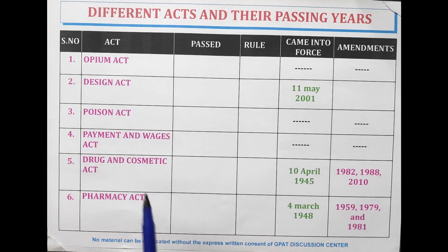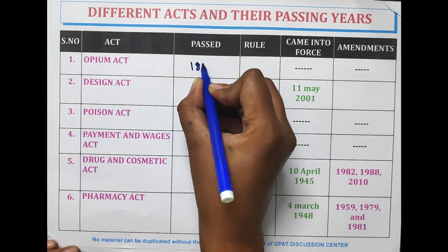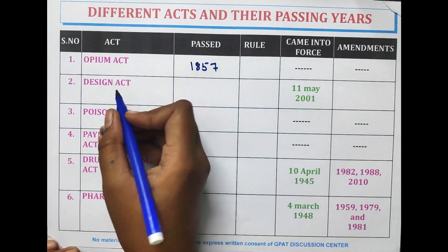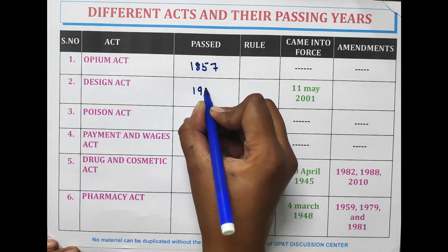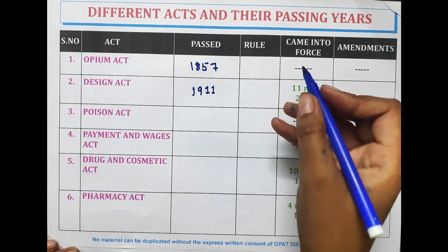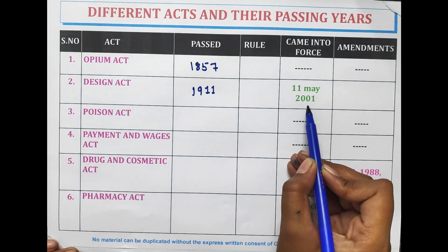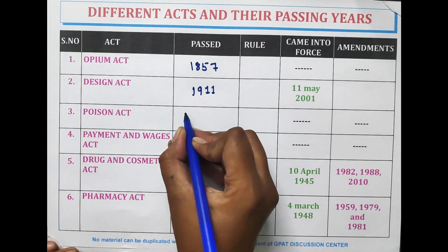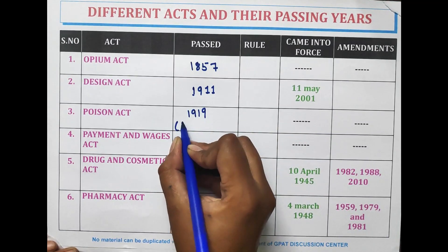The first act is the Opium Act, which was passed in the year 1857. The Design Act was passed in 1911 and came into force on 11 May 2001. The Poison Act was passed in 1919, on 3rd September.